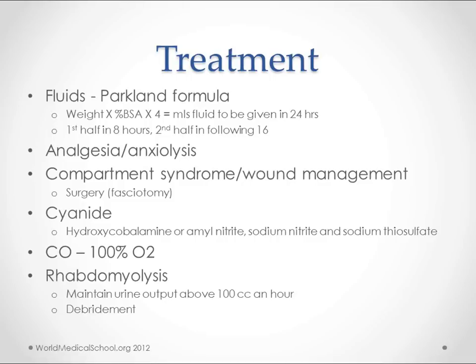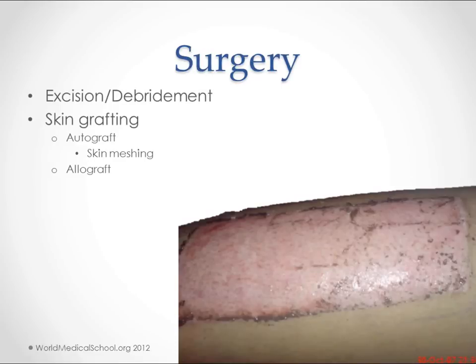Debridement consists of getting rid of all the dead tissue and bad skin. One of the important reasons for doing this is the possibility of infection — dead tissue is a great breeding ground for bacteria. Pseudomonas is the classic infection you think about with burns, but it could be any type, including staph or strep. Make sure we're getting rid of the dead tissue.